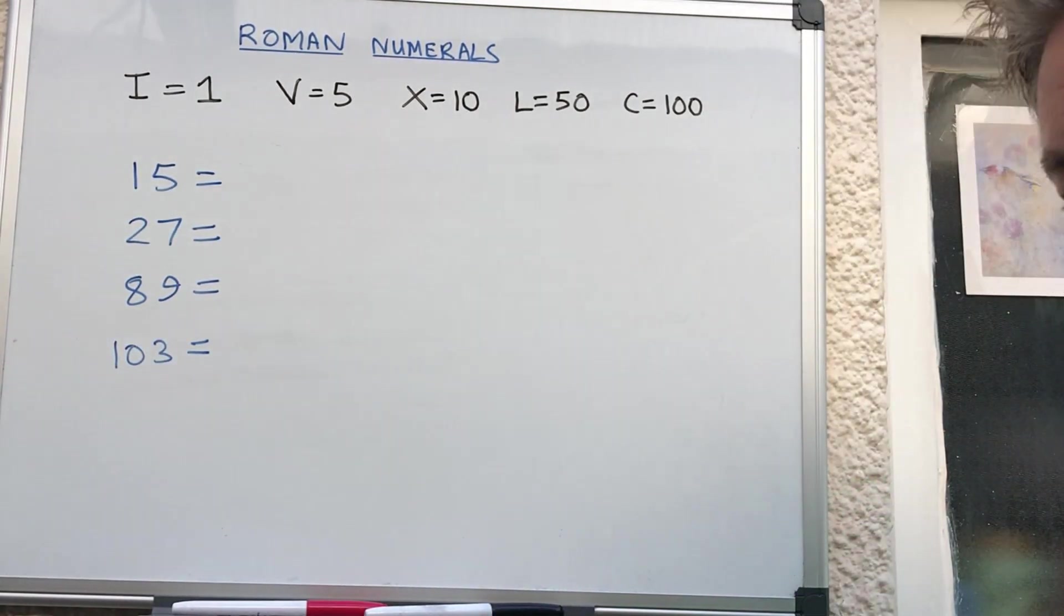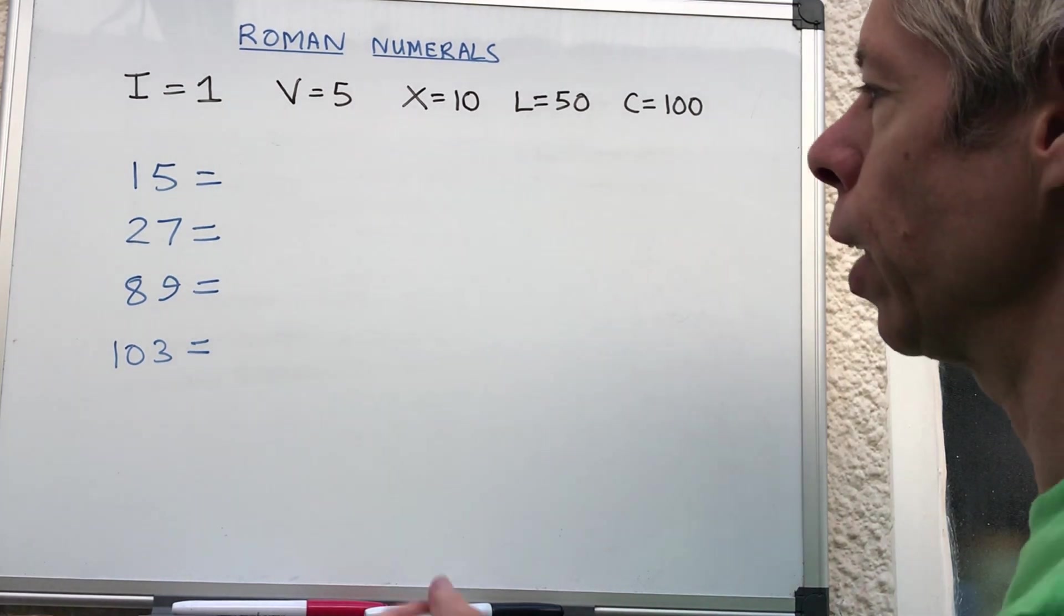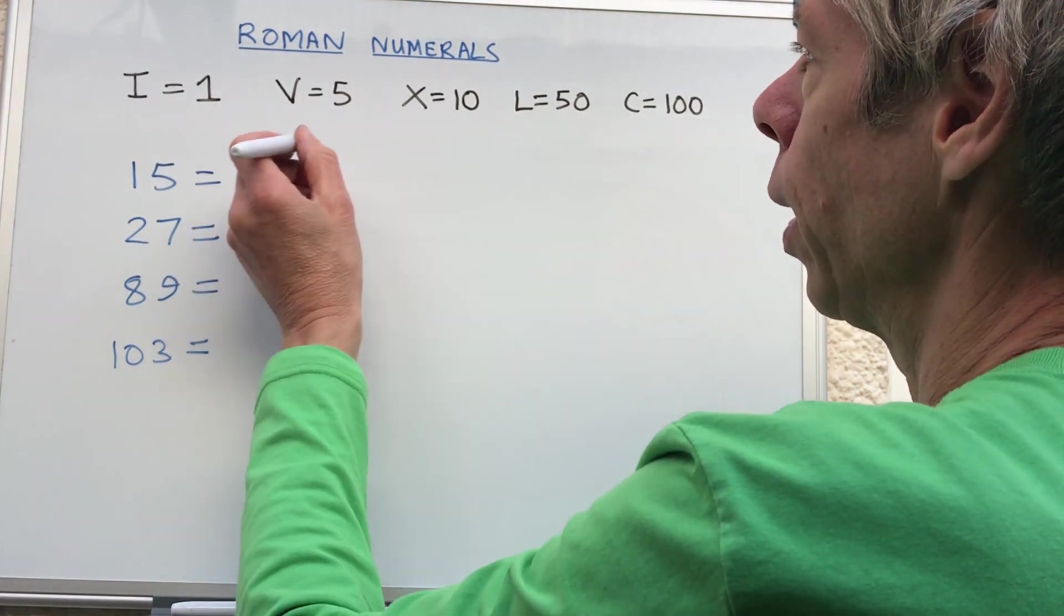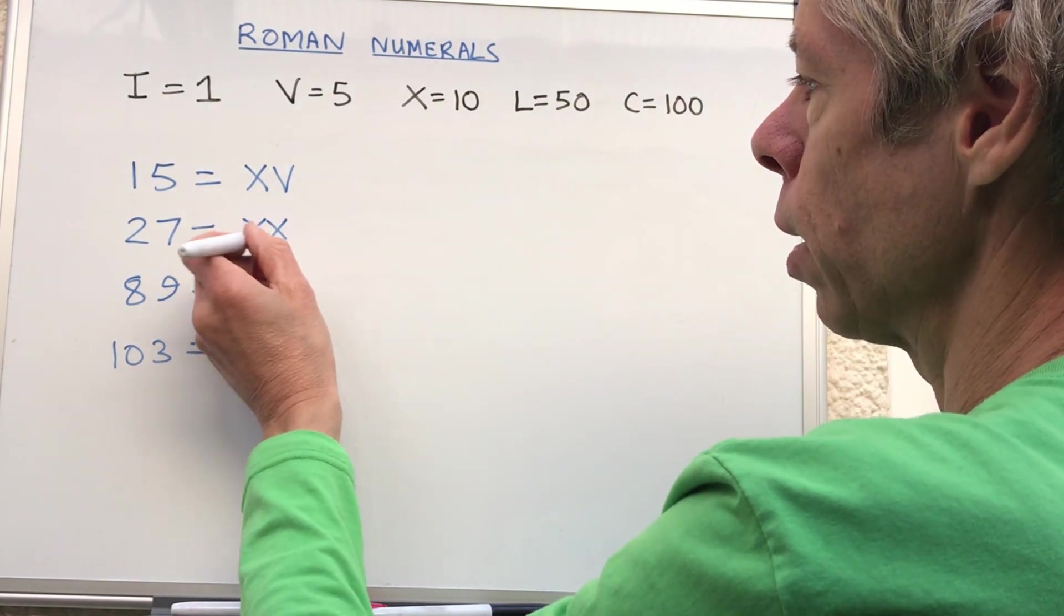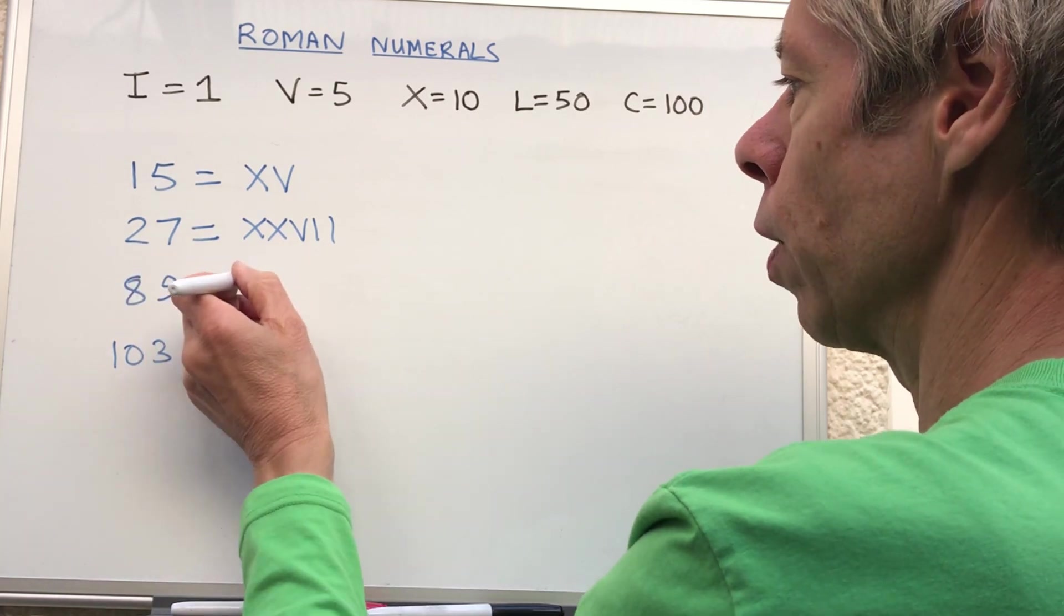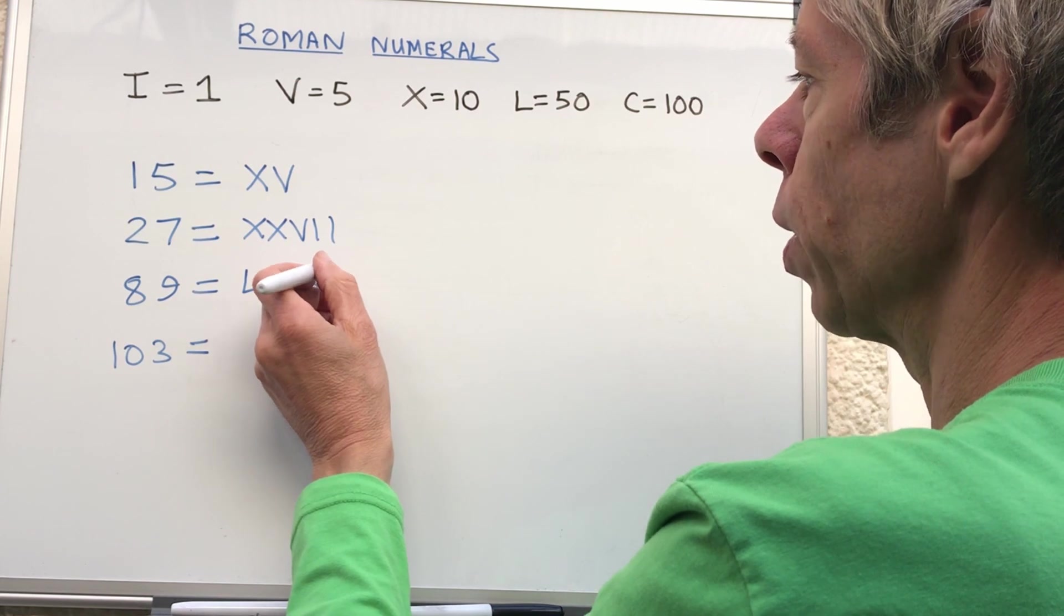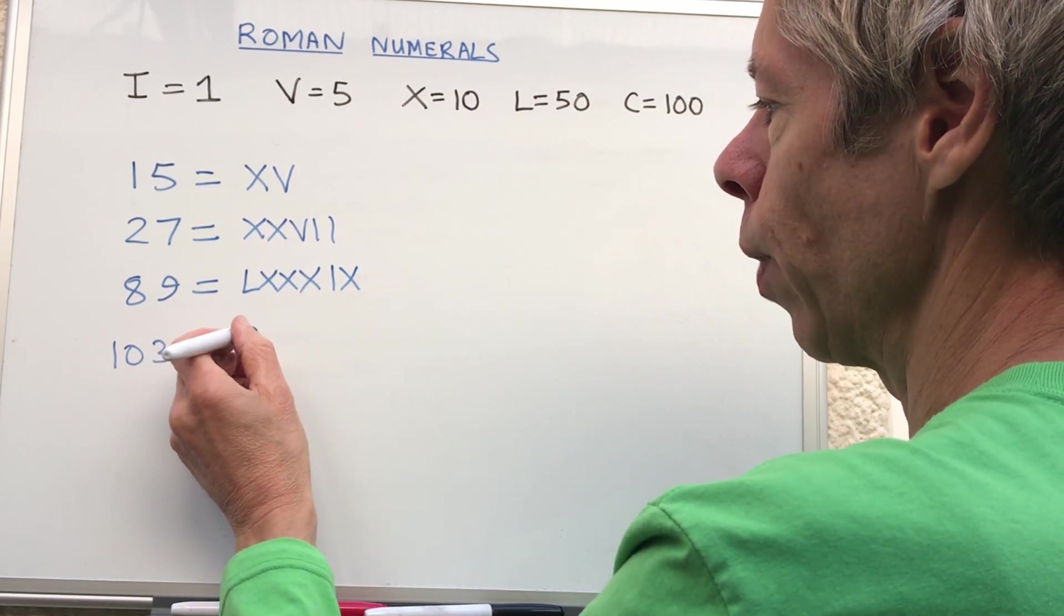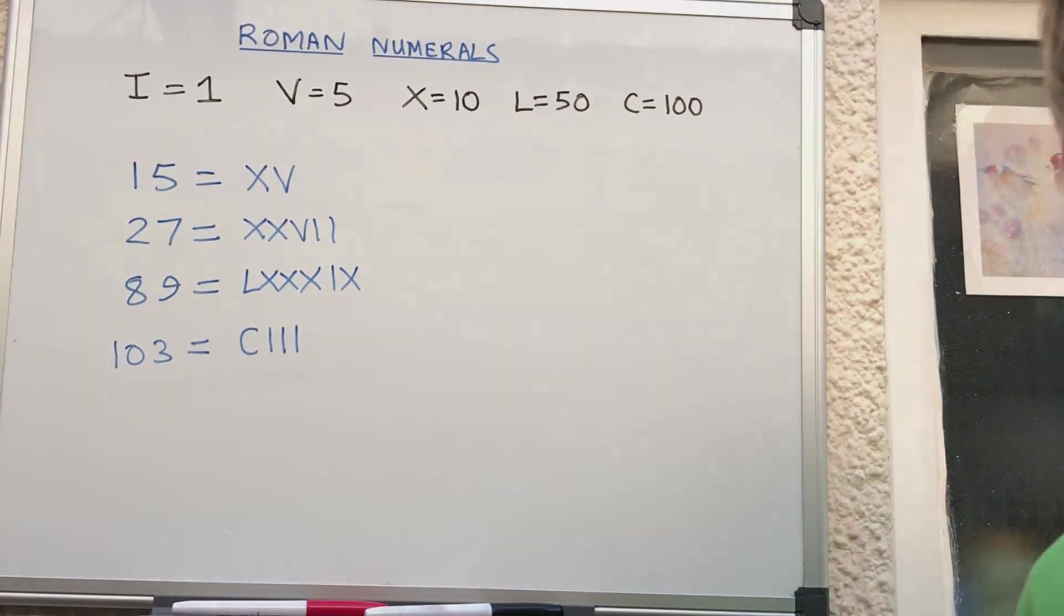See what you make of those. If you haven't scribbled those down you can always stop the video. 15 - we need X for 10 and V for 5, so XV. 27 - we need 2 tens and then 5, 6, 7, so XXVII. 89 - we need to make 80 first which is LXXX and then 9 which is IX. 103 - we need to make 100 and then 1, 2, 3.